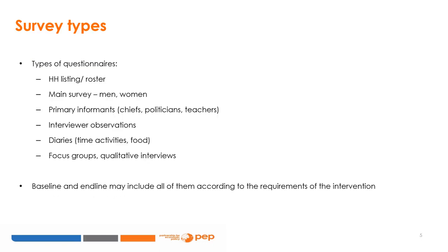The baseline and the endline can include many types of questionnaires. The list is comprised, among other components, of a household listing or roster, a main survey, primary informants such as chiefs, politicians, teachers, etc., interviewer observations, diaries covering time, activities, food, etc., and focus groups, which are qualitative interviews.